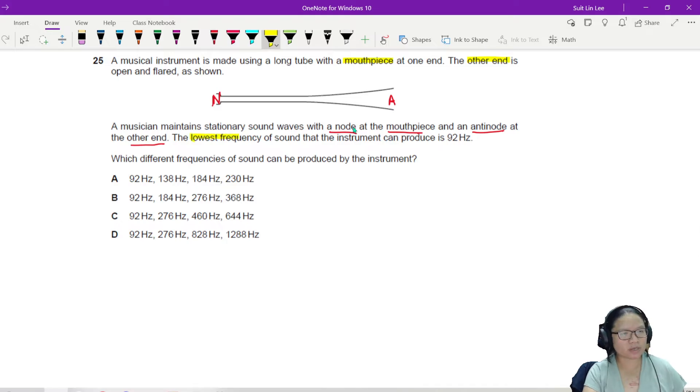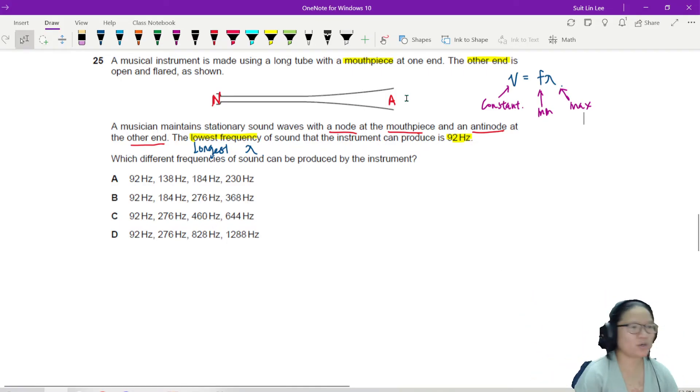The lowest frequency of the sound that the instrument can produce is 92 hertz. Lowest frequency also means longest wavelength. Teacher, how you know? Well, V equals F lambda, the favorite equation for waves. So the speed of sound wave is constant. Speed of sound wave doesn't change, right? Meaning if the frequency is minimum, then the lambda has to be maximum so that the velocity is kept constant.